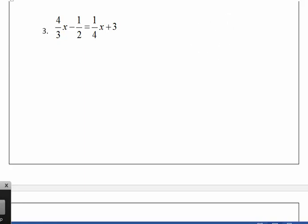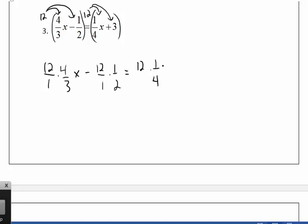And now I'm going to multiply everything by the LCD. So 12 times this side, 12 times this side. Remember, you're going to have to multiply the 12 by the 3, even though the 3 is not a fraction. So let's do this. 12 times 4 thirds x minus 12 times 1 half equals 12 times 1 fourth x plus 12 times 3. And now we simplify, divide the 1 into 12, goes 4 times, gives me 16x minus 6 equals 3x plus 36.